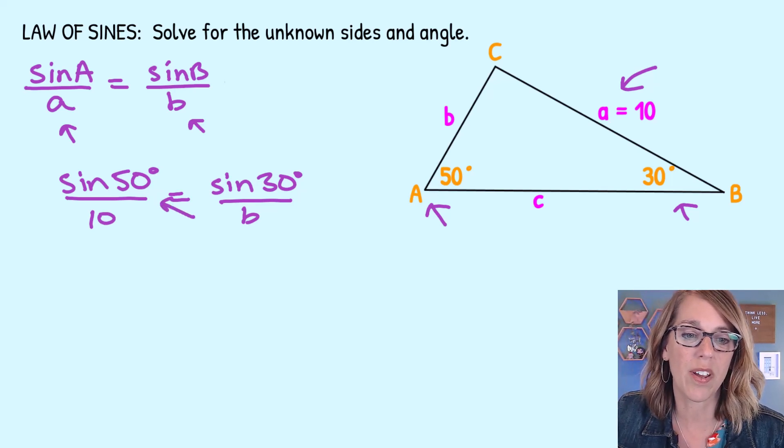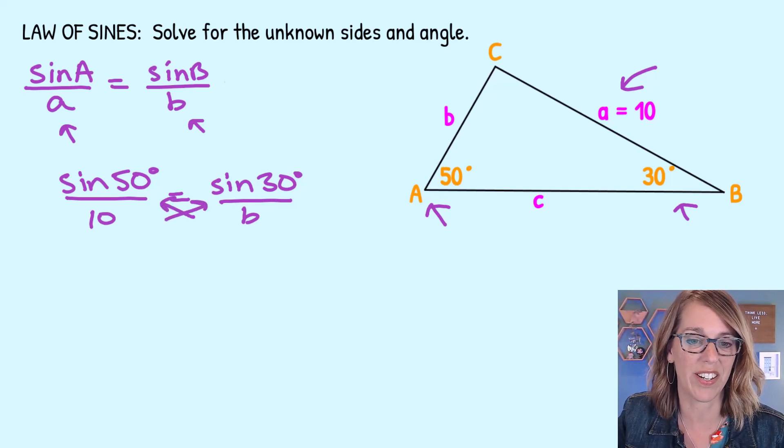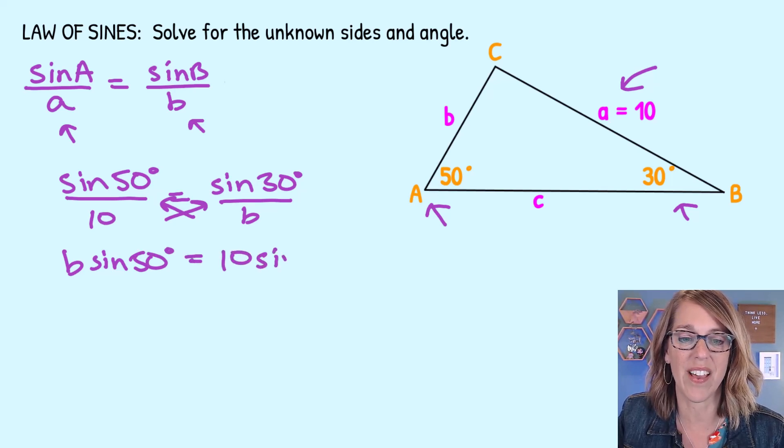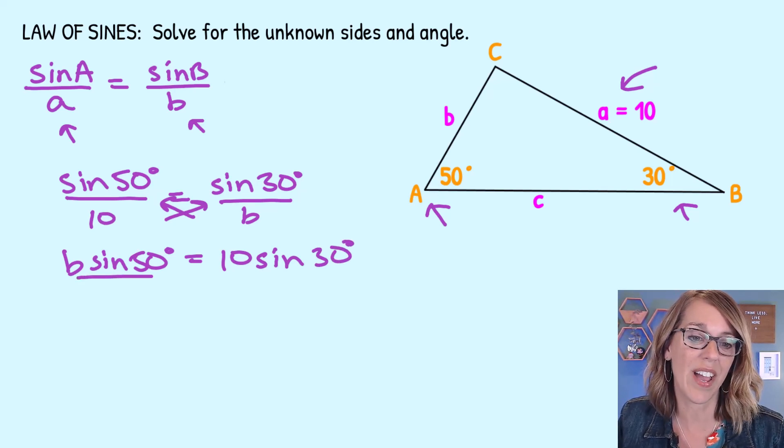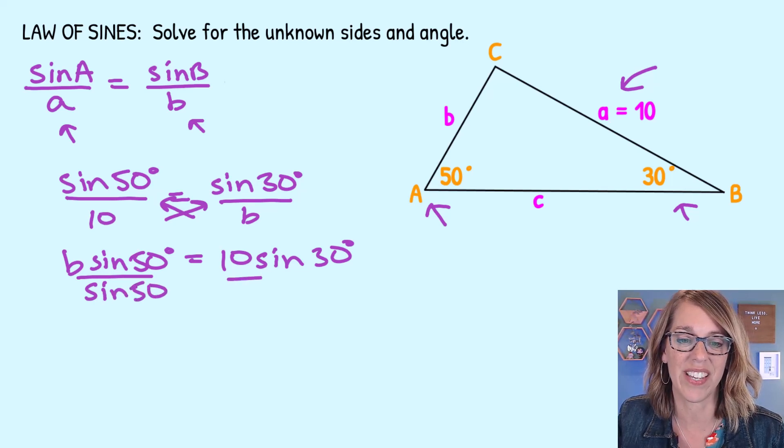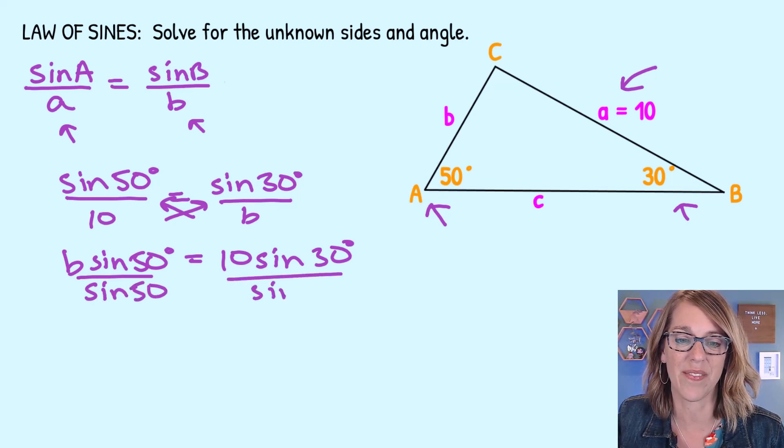I'm just going to do a quick cross multiplication here, and I end up with B times the sine of 50. So B times the sine of 50 degrees is equal to 10 times the sine of 30 degrees. And in order to solve for B, I just need to divide both sides by that sine of 50.